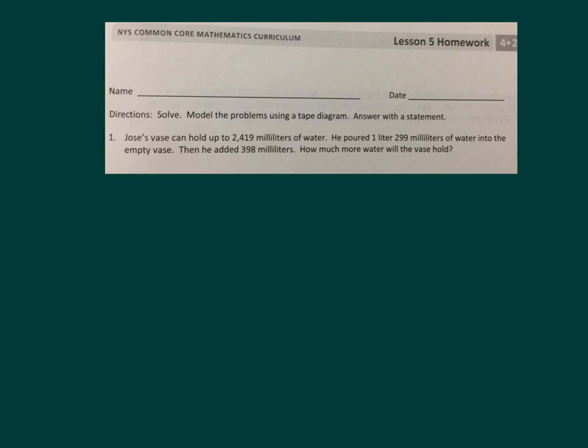Here we have the first problem. Let's go ahead and read it together. Jose's vase can hold up to 2,419 milliliters of water. He poured 1 liter, 299 milliliters of water into the empty vase. Then he added 398 milliliters.